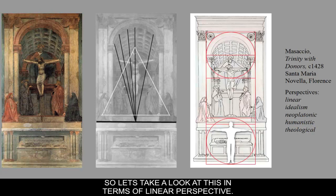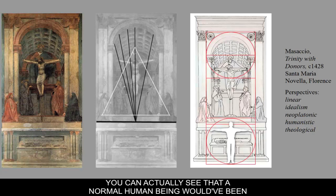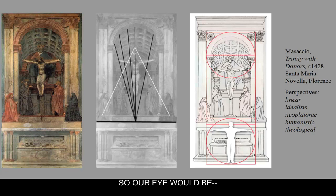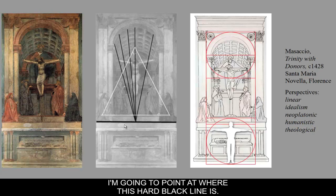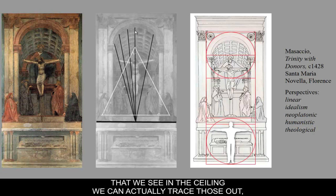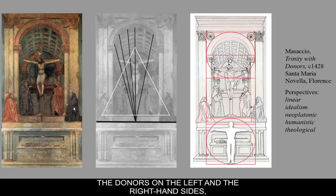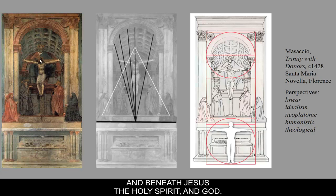Let's look at this in terms of linear perspective. The diagram on the right-hand side shows that a normal human being would have been standing at this height — actually emulating Leonardo's Vitruvian man that we'll study later. Our eye level, the horizon line, would be right where the lintel is. If you trace the lines out of the coffers in the ceiling, the vanishing point is in the center, right at our eye line. That places us beneath the donors on the left and right, beneath Mary and John the Evangelist, and beneath Jesus, the Holy Spirit, and God.